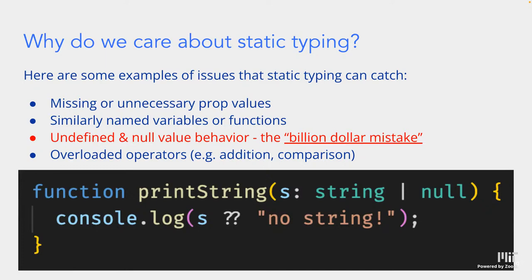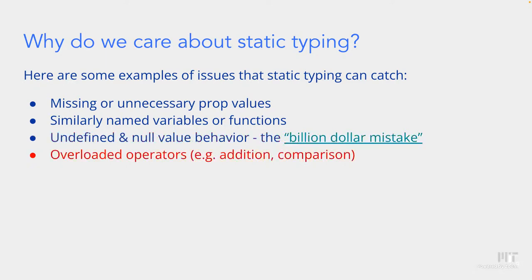One pattern is null coalescing: if `s` is not null, print `s`; if it is null, print 'no string'. The inventor of null values called it the 'billion dollar mistake' because null values reference nothing in code or memory, costing companies billions due to null value behavior not being caught in production. Finally, TypeScript helps prevent overloaded operator bugs — in JavaScript, `1 + '1'` returns the concatenated string '11', which causes bogus results if you accidentally pass a string where a number is expected. TypeScript won't even allow you to compile when you try to add two variables of different types.